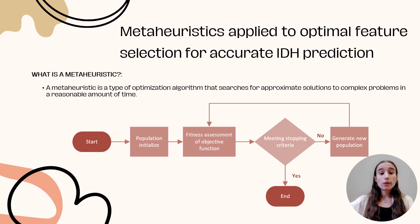A metaheuristic is a type of optimization algorithm that looks for approximate solutions to complex problems within a reasonable amount of time. These algorithms work through an iterative process: first, a population of candidate solutions is initialized; each solution is then evaluated using a fitness function; and based on these evaluations, the algorithm modifies the solutions to generate a new population, aiming to improve the overall fitness. This process repeats until a stopping criterion is met.